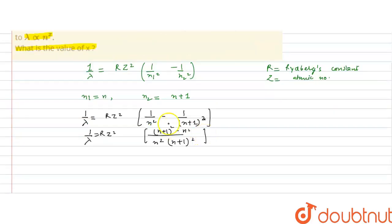So, when we open this square, that will be 1 by lambda equals to Rz square. This will be n square plus 1 plus 2n minus n square.